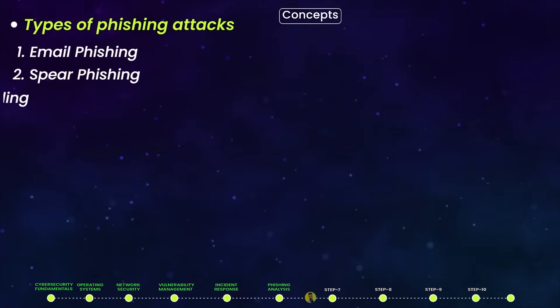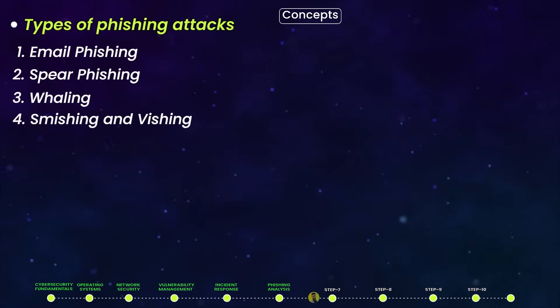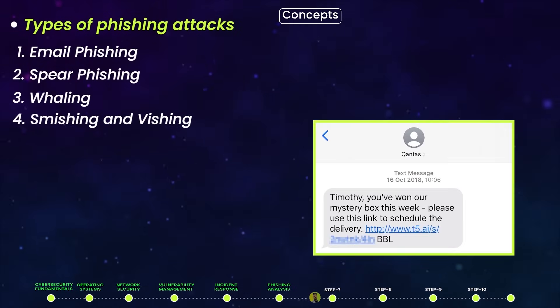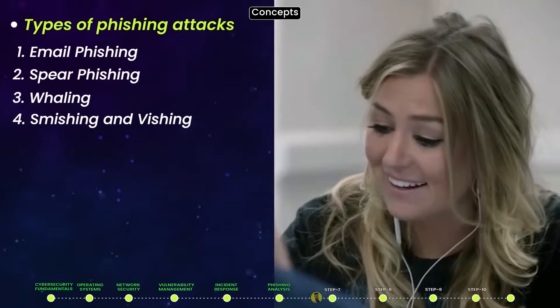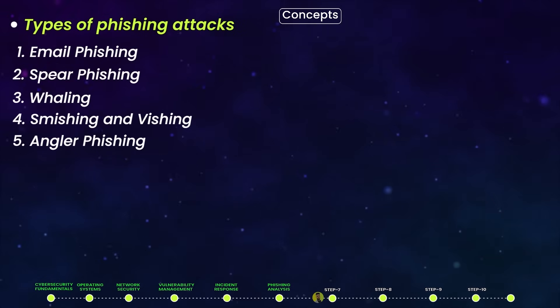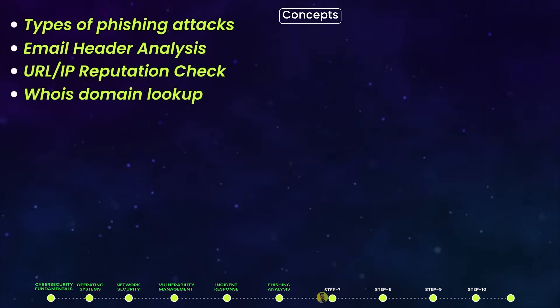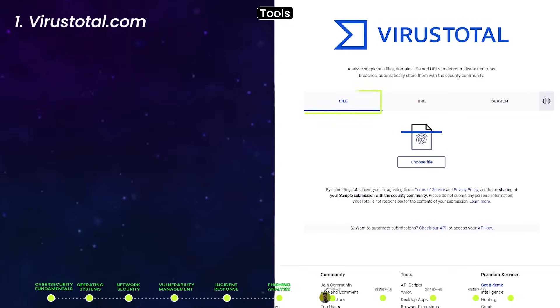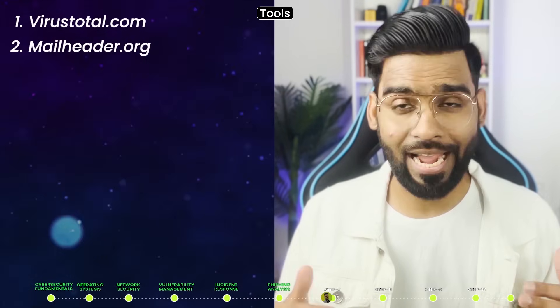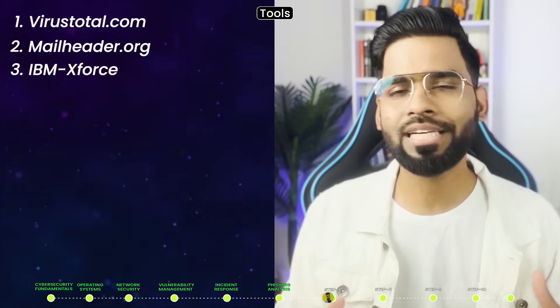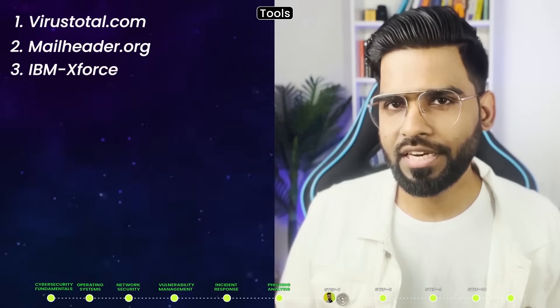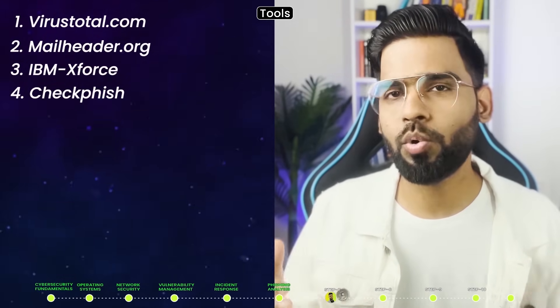Other phishing types include whaling, which targets senior executives; smishing, which involves criminal text messages; vishing, which involves telephonic conversations; and angler phishing, a social media-based phishing attack that is very popular. Key concepts include email header analysis, URL and IP reputation checks, and WHOIS domain lookup. Tools include VirusTotal for scanning files, URLs, IPs and domains; Mailheader.org for email headers; IBM X-Force for threat intelligence; and Checkphish for IP and URL lookup.